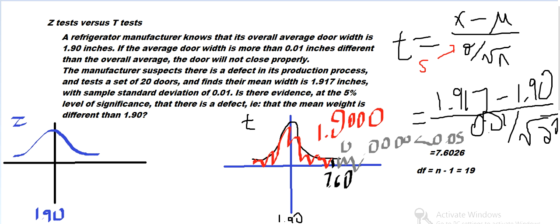So we can conclude that there is a defect, that the mean width is different than 1.90. Great, hope that makes sense. If you have any questions, good day.